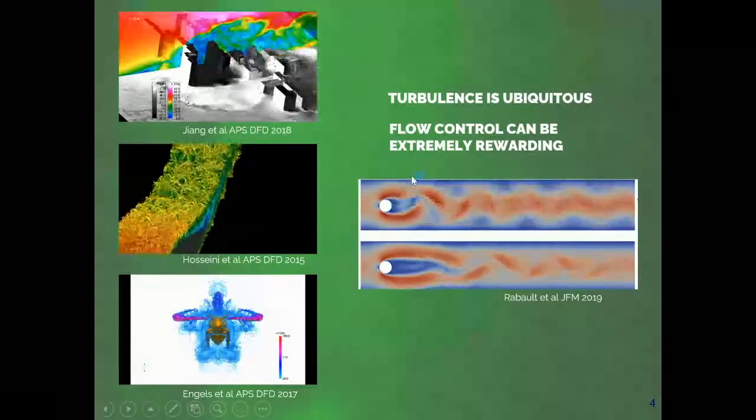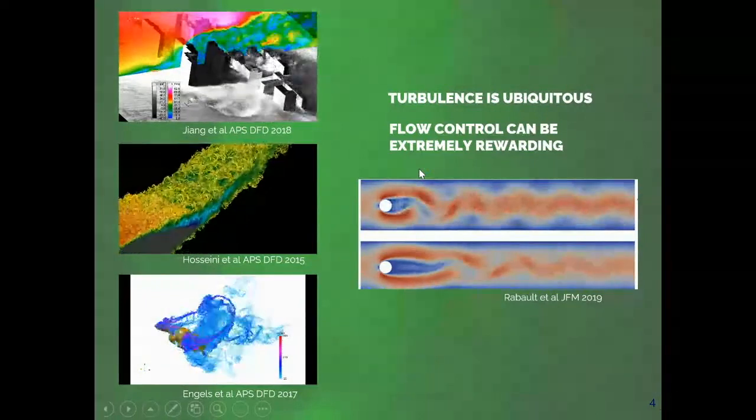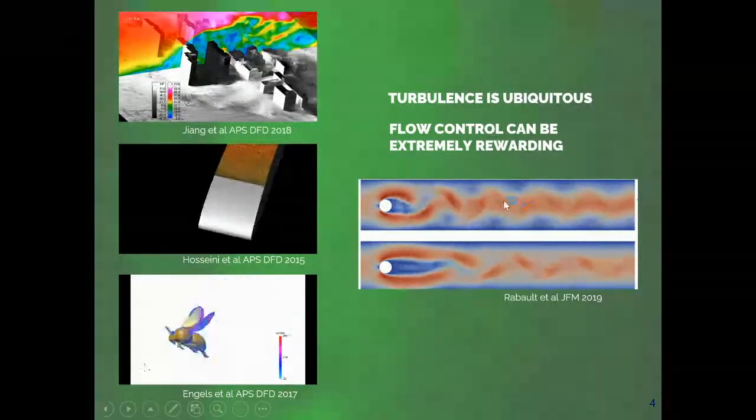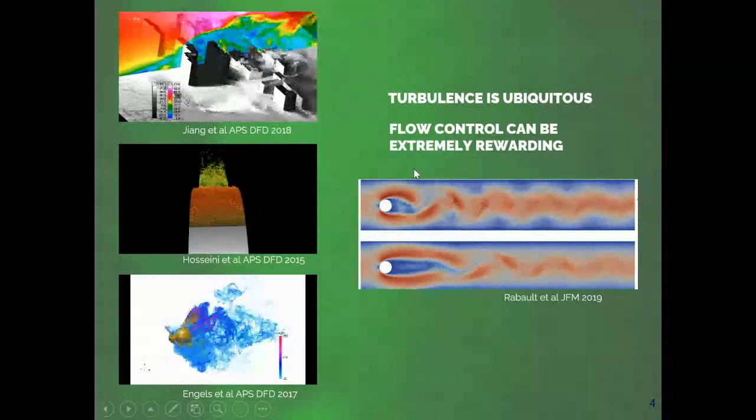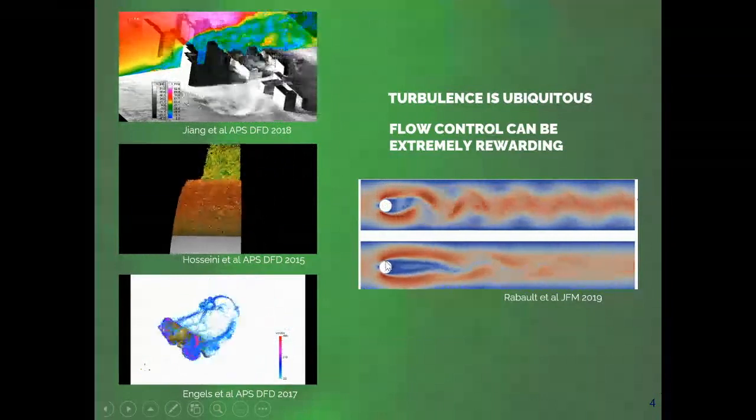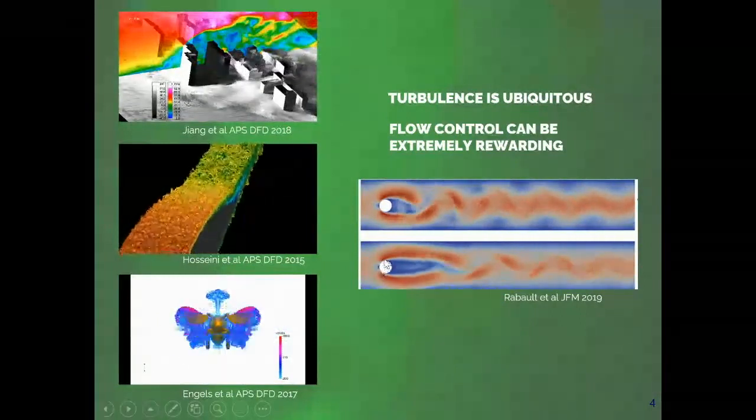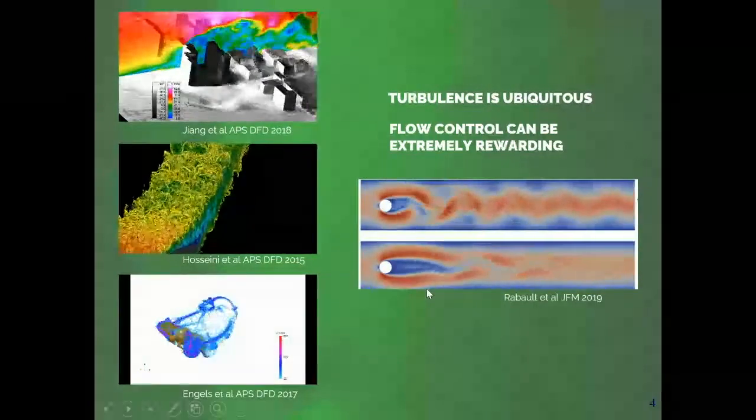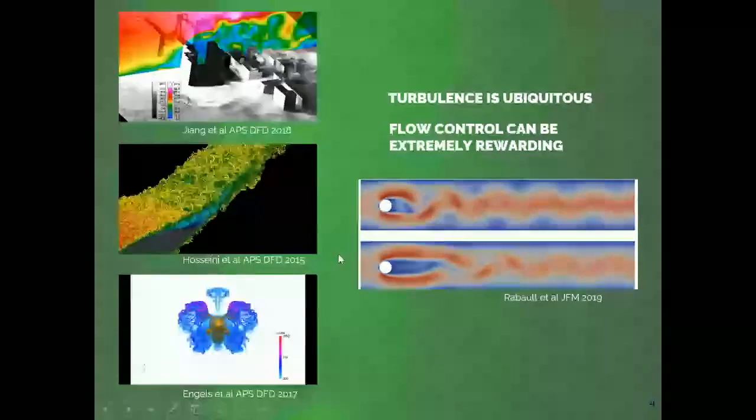Just to give you an example, this is a recent work in which deep reinforcement learning has been used to control the wake behind a cylinder. You know that a cylinder past a certain Reynolds number delivers a periodic wake, a shedding wake, which delivers oscillations in the lift coefficient and the drag coefficient. And if you train two actuators here, two little jets in this position, what you can do is train a neural network to try to suppress or at least reduce the intensity of these vortices and play with the forces that are acting on the cylinder.